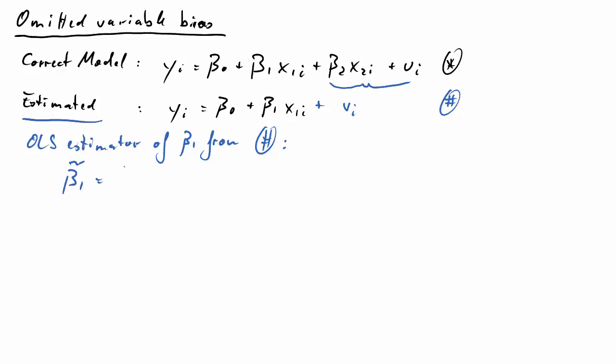Now the OLS estimator for beta 1 from here, I shall call it beta 1 tilde, I could call it hat but I call it tilde, is covariance of x1 and y divided by the variance of x1. That's just the standard definition. And the question is now, is beta 1 tilde unbiased?